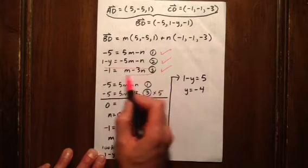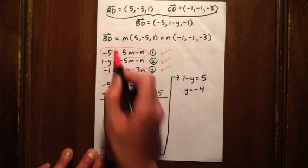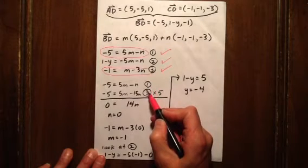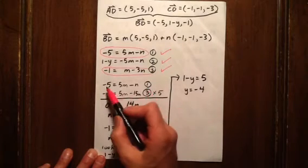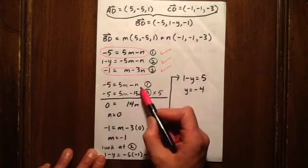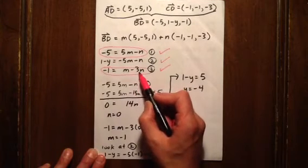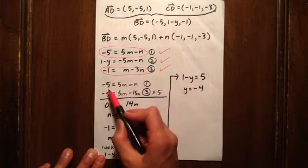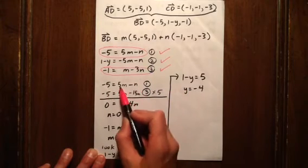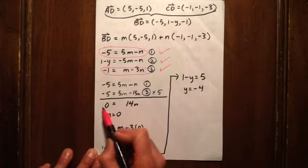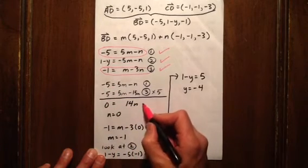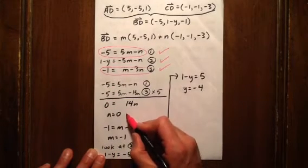Focusing only in on equations 1 and 3, we see that we've got two equations, two unknowns. And we can solve that out. What we can do is we can simply multiply equation 3 by 5, setting up an elimination of the m terms. And when we do that, we get 0 equaling 14n. So clearly, n has to equal 0.